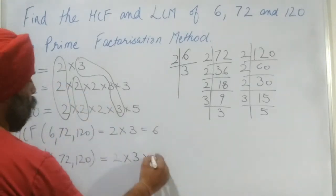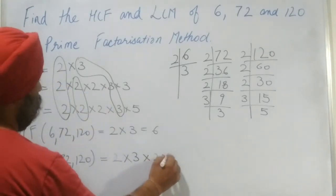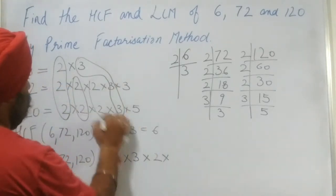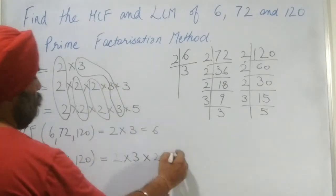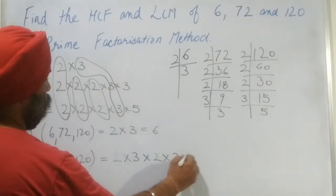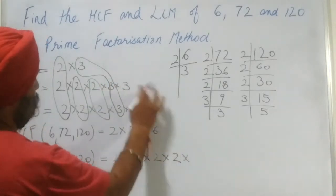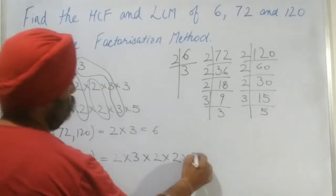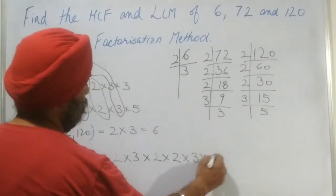For 72 and 120, the common factor is again 2. And further, another 2. The remaining numbers are 3 and 5.